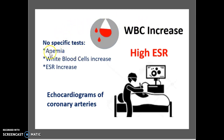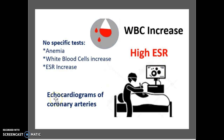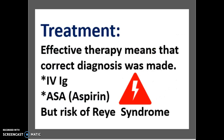White blood cells do increase. There is no specific test, but something that is recommended is checking for anemia and noting that white blood cells are increasing. The ESR also increases, which can indicate Kawasaki disease. Echocardiograms of the coronary arteries are also recommended.